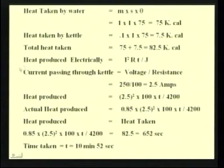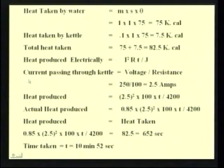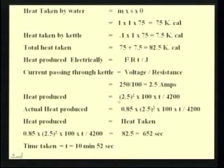As per Joule's law, heat produced electrically equals I squared R T divided by J, where I is the current, R is the resistance, T is the time taken, and J is Joule's constant. Current passing through the kettle equals voltage divided by resistance: 250 volts divided by 100 ohms, giving 2.5 amperes. Heat produced equals I squared, that is 2.5 squared, into R which is 100, into time T, divided by Joule's constant 4200. The actual heat produced equals efficiency times heat produced, i.e., the kettle is not 100 percent efficient; efficiency is given as 85 percent, written as 0.85.